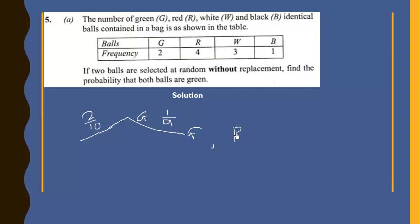So now the probability of choosing both balls to be green without replacing it will be equal to the first probability that is 2 over 10, and the second probability is 1 over 9. And this will give us 2 over 90, and we simplify to get 1 over 45.